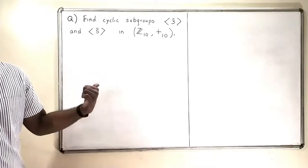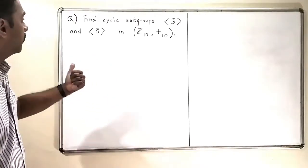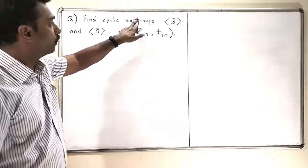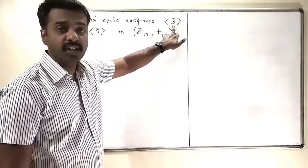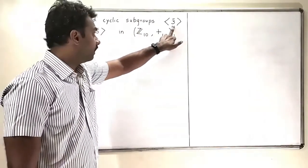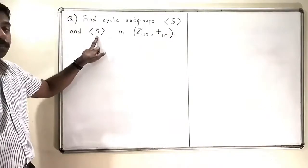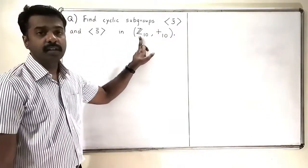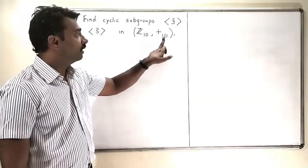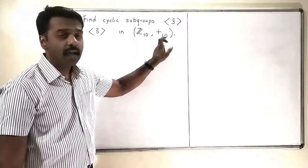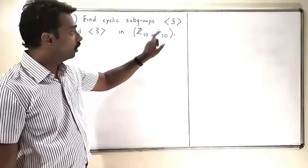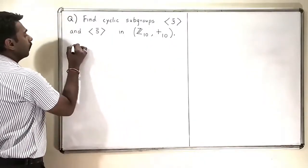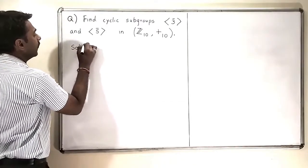In this problem, we will find cyclic subgroups — specifically the cyclic subgroup generated by 3̄ and the cyclic subgroup generated by 5̄ in the group Z10 with respect to the operation addition modulo 10. So now we all know what are the elements of Z10.